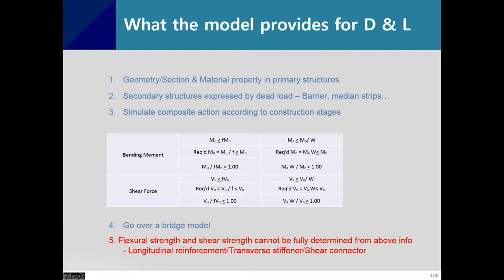The modeling information relevant to design check and load ratings includes geometry, layout, section and material properties of primary structures such as steel girders and cross frames. For flexural strength limit checks, all section dimensions are already in there. Dead loads from secondary structures like barriers and median strips are already defined in the Steel Composite Bridge Wizard, so you don't need to redefine them during design check.